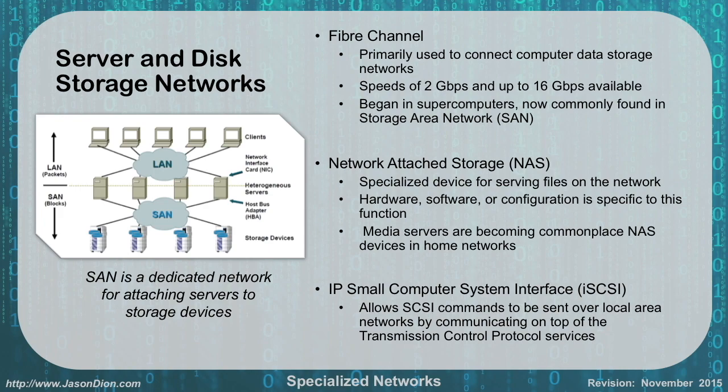The next network type is server and disk storage networks, and we have three main ones to cover. The first is Fibre Channel — spelled F-I-B-R-E — which is primarily used by computer data storage networks. It uses fiber cables to connect storage and offers speeds from 2 up to 16 gigabytes per second. It started out as storage arrays for supercomputers but is now found in storage area networks in server environments as well.